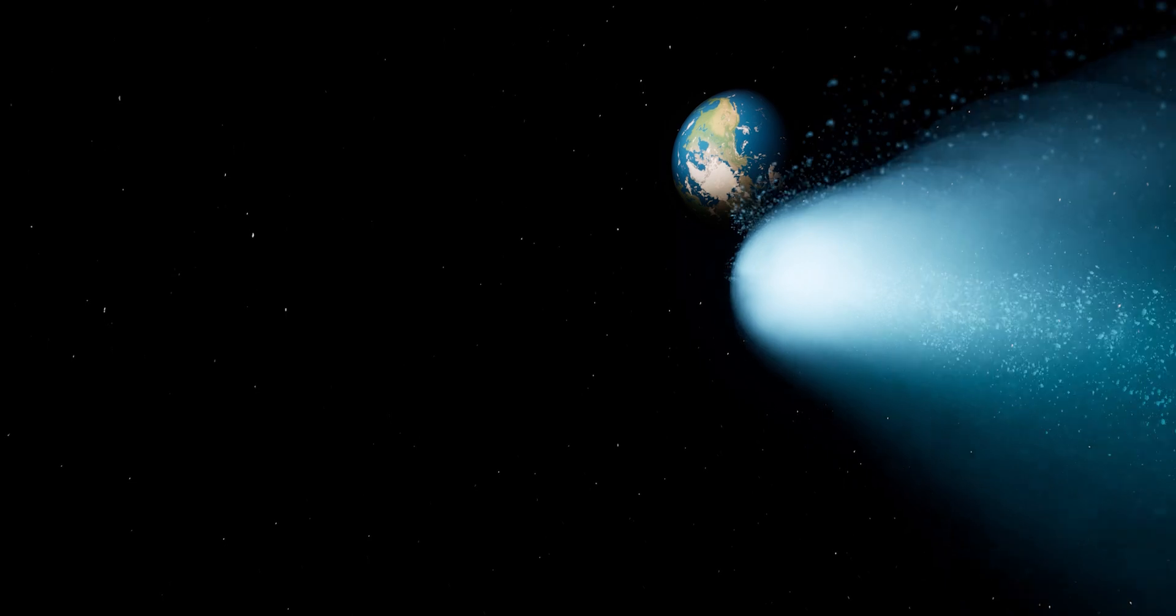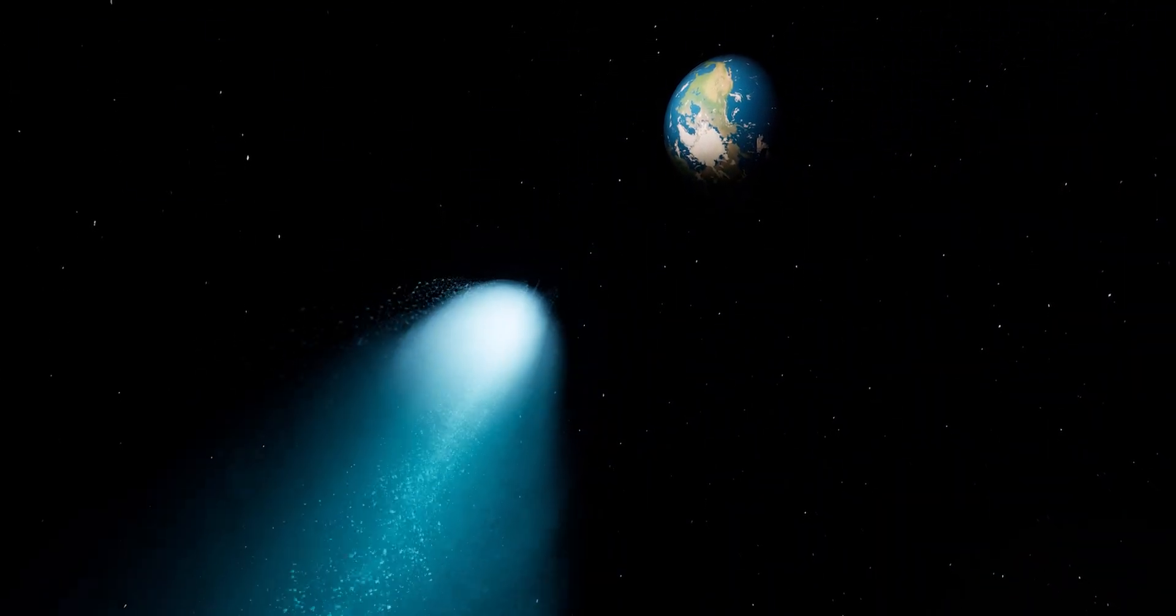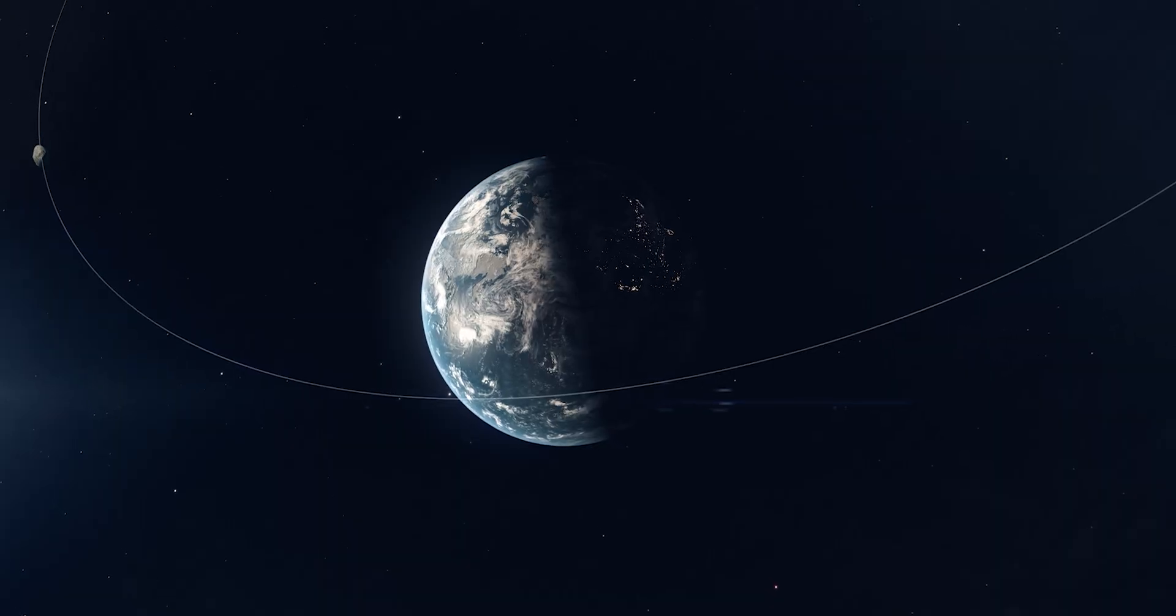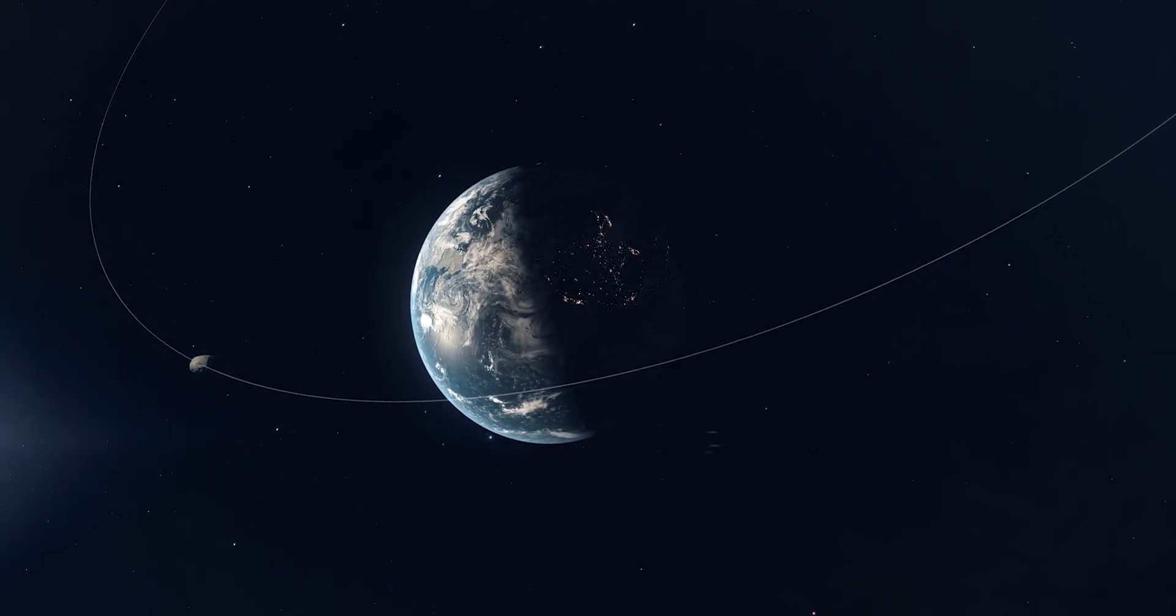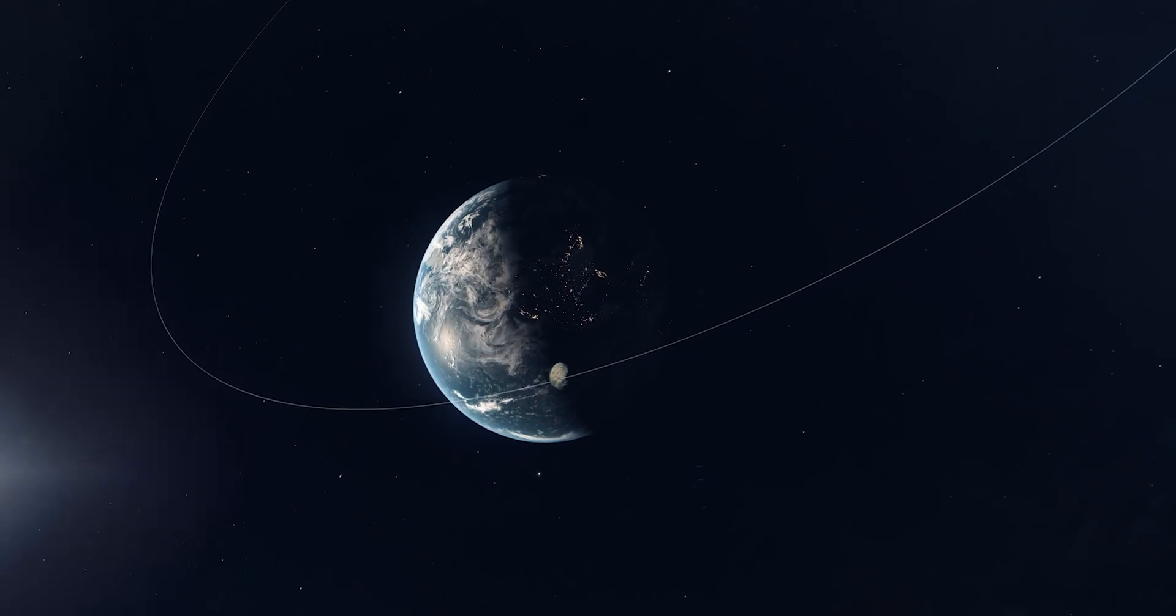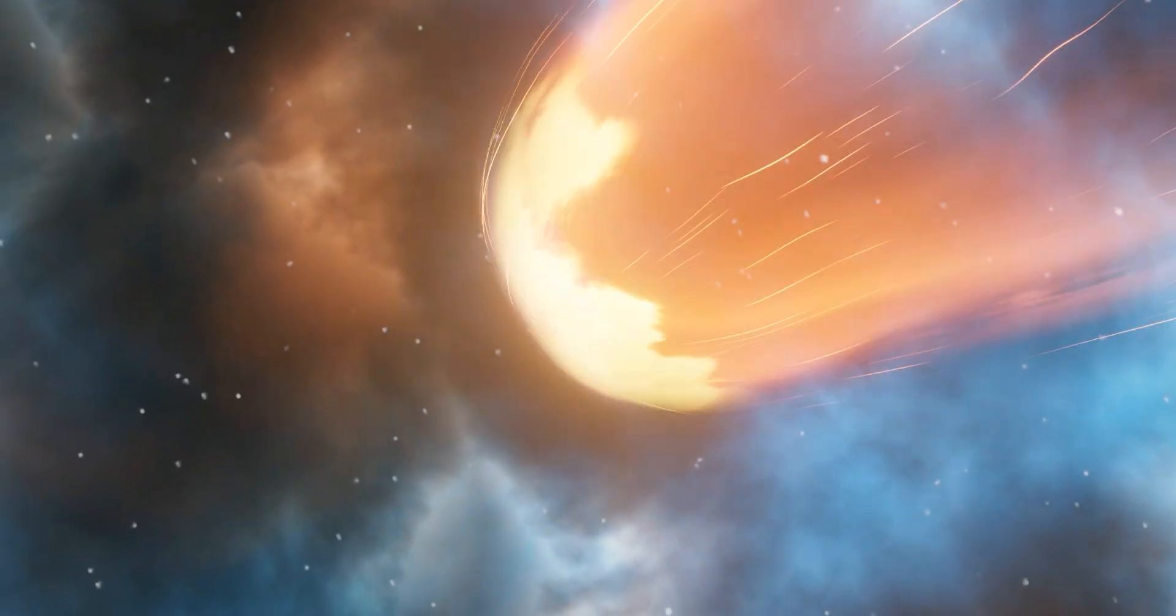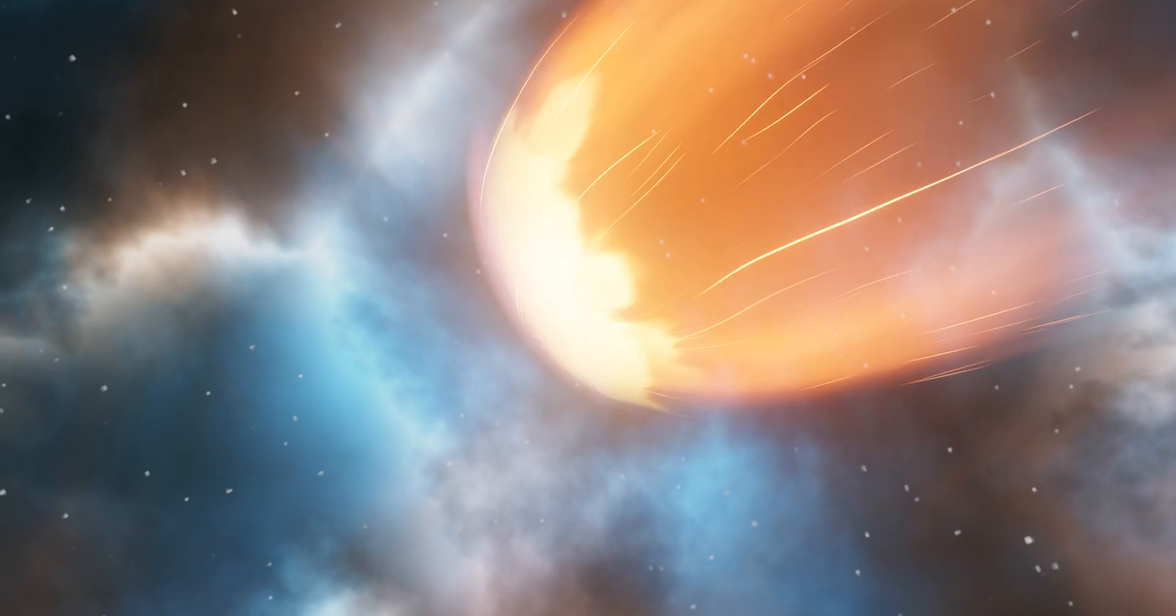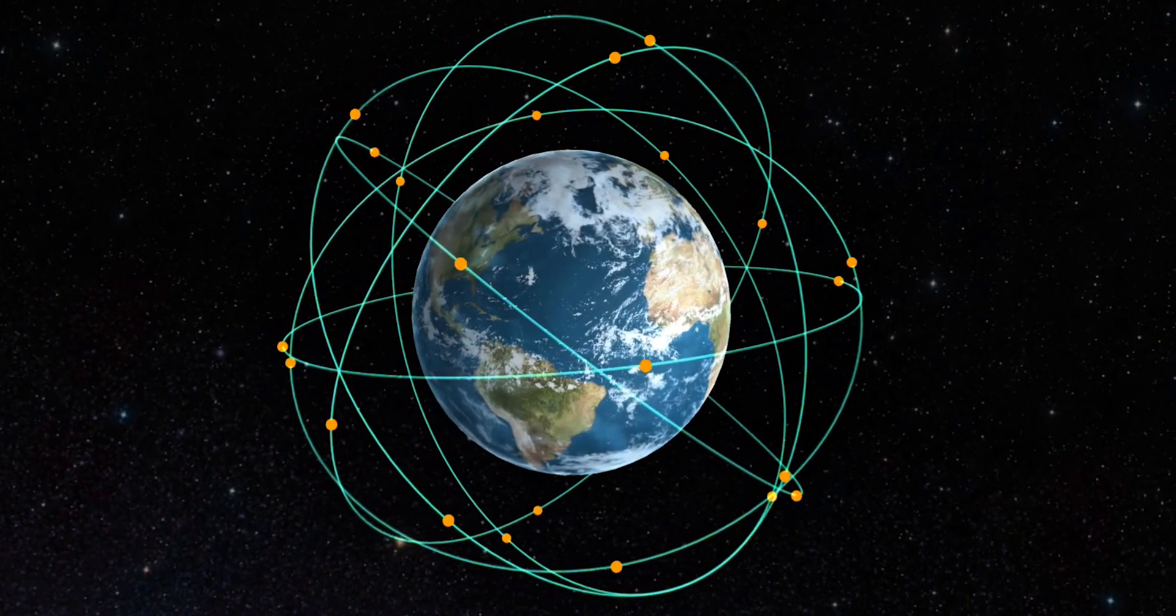Even when a comet misses Earth by tens of millions of kilometers, the debris stream it sheds can stretch thousands of times that distance. Tiny grains of rock and ice, too small to see, follow slightly different paths, spreading into a broad ribbon that Earth may eventually cross. When that happens, those grains burn up harmlessly as meteors. But for spacecraft, they can be devastating.